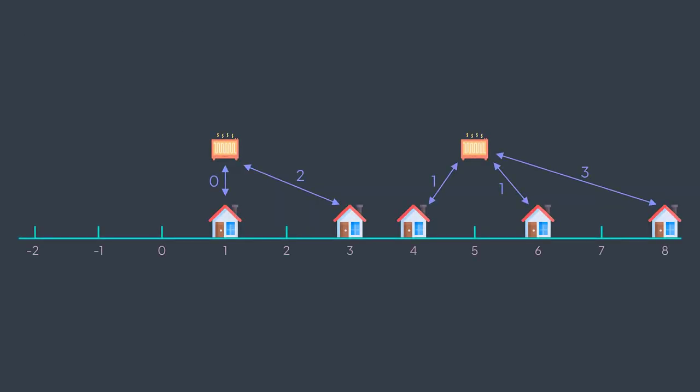Let's try it with our example. House at position one — its closest heater is at position one, distance is zero. House at position three — its closest heater is at position one or five, distance is two. House at position four — its closest heater is at position five, distance is one. House at position six — distance is one. House at position eight — distance is three. We got all the distances, and the maximum among them is three.